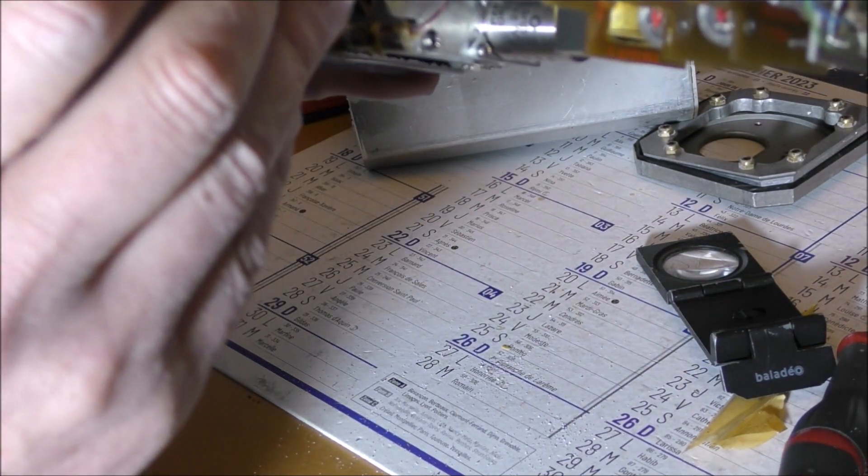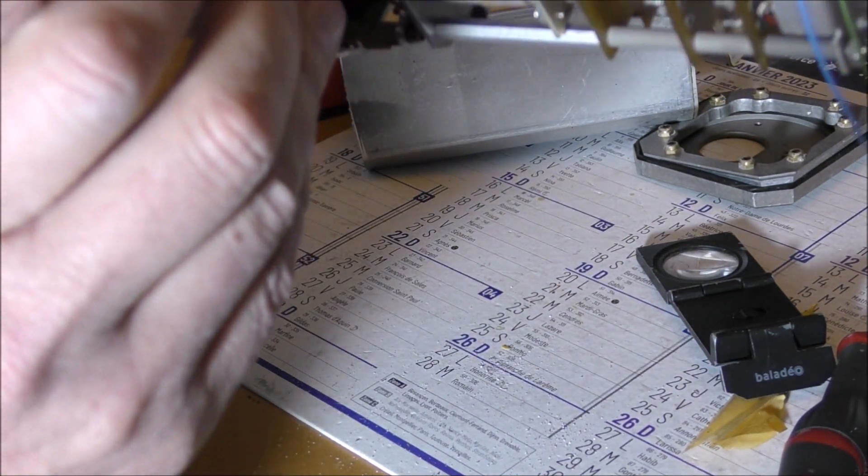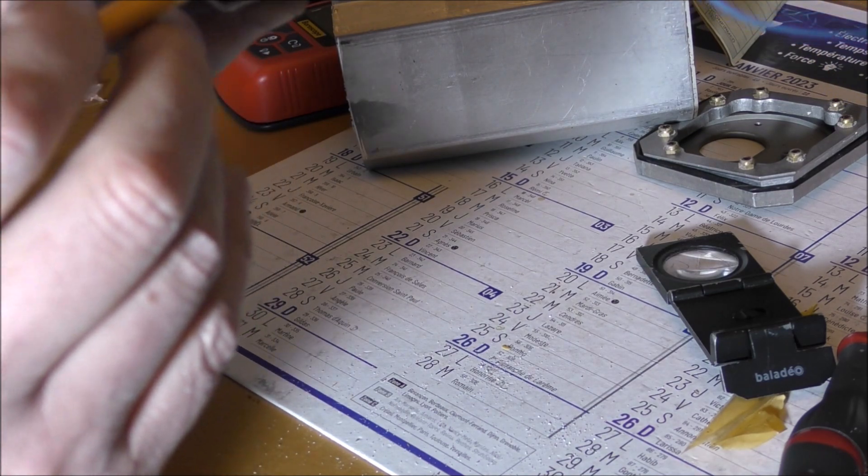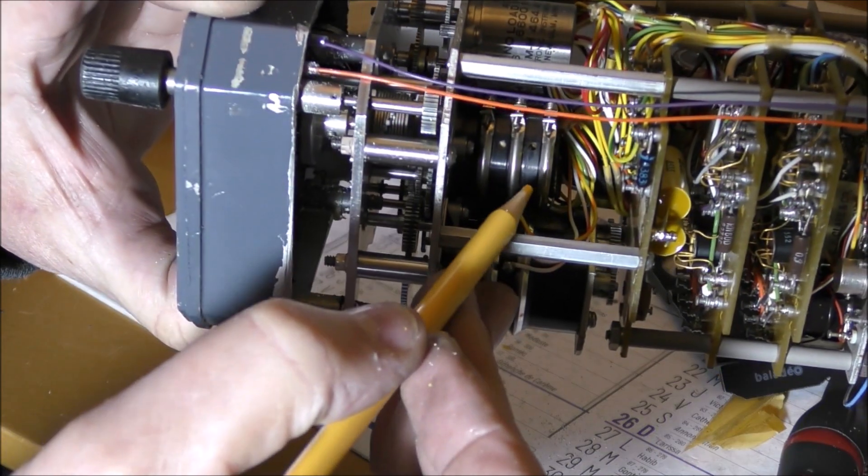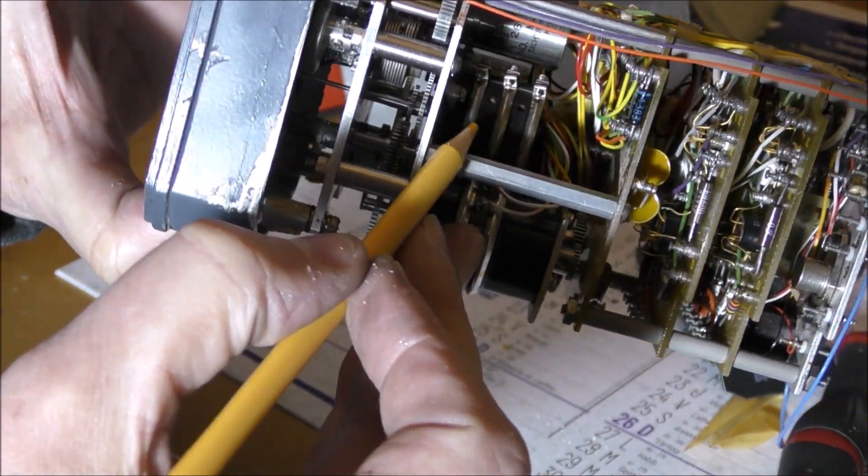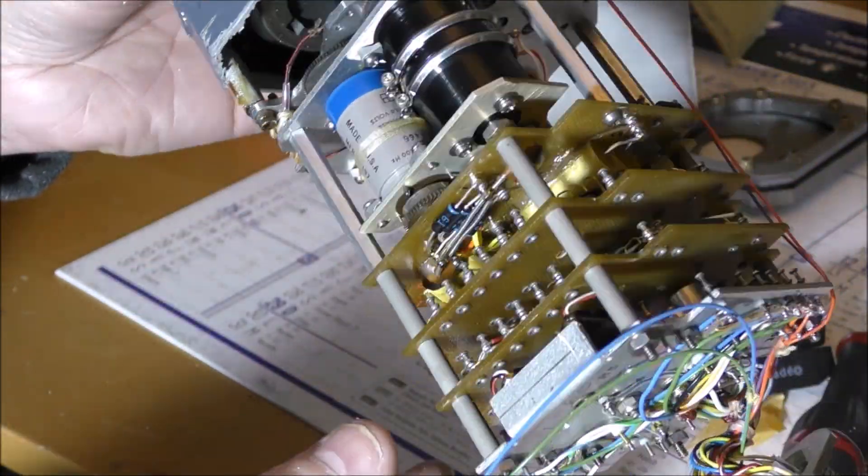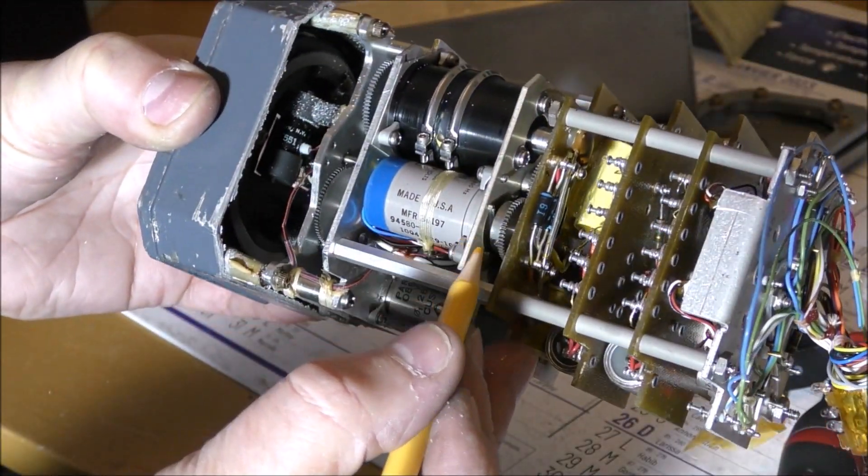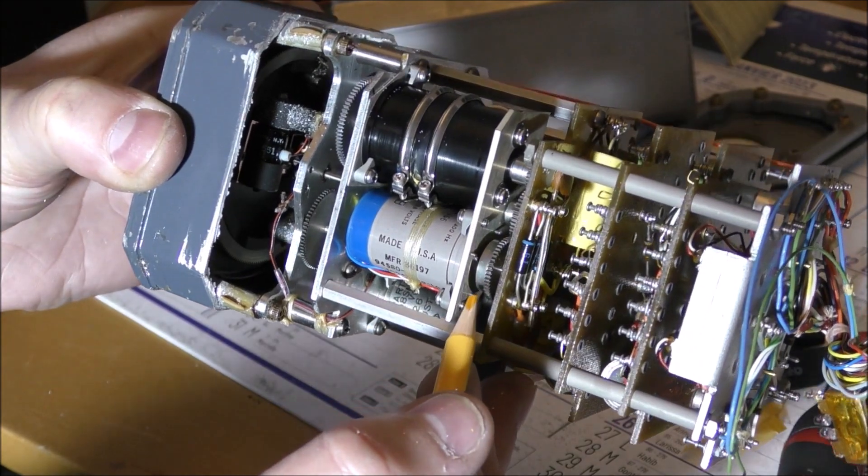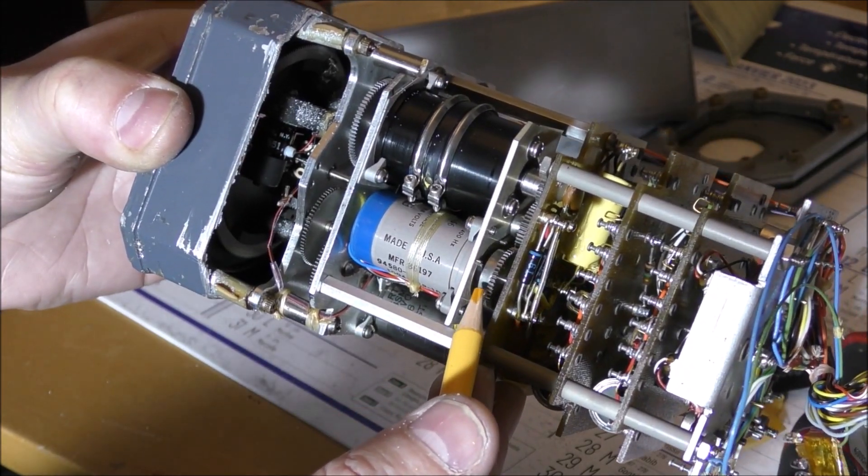We can see here a potentiometer, and there is another one. Probably this is a dual potentiometer. This is maybe a synchrotransmitter to permit to have a copy of the measurement.